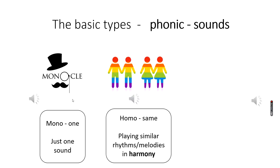We have homophonic. If you think of a homophone — homo means same — so a homophone is like 'whir' and 'were'. They spell differently but they sound the same. Homophonic literally means something that is playing similar rhythms or similar melodies but maybe in harmony. Just like this choir example — they're all moving at the same time but singing in harmony, so different notes.